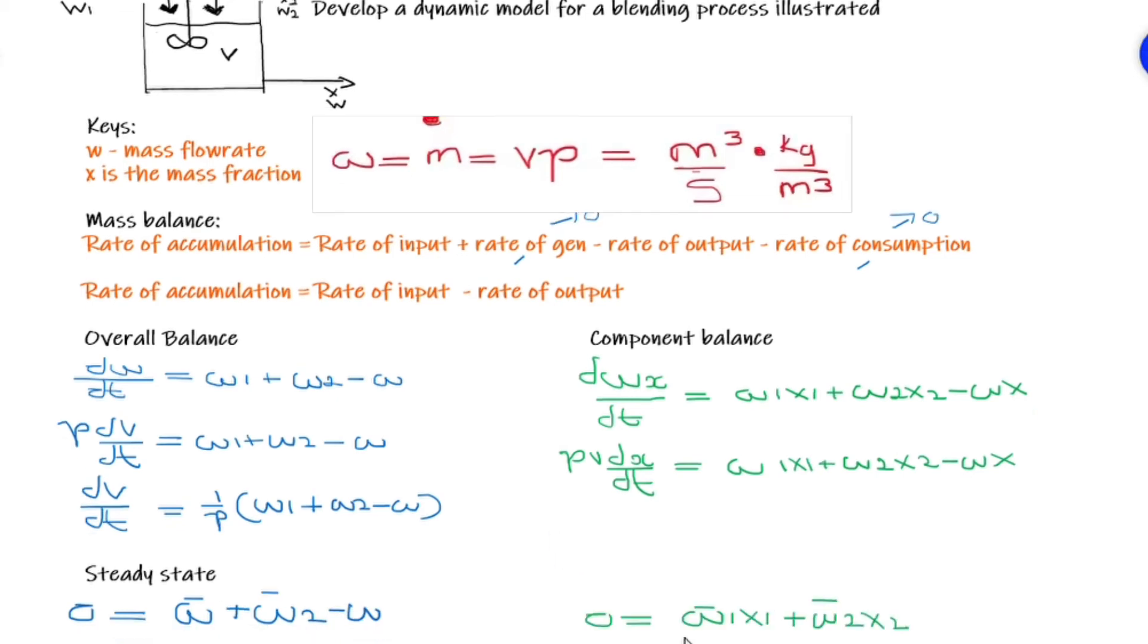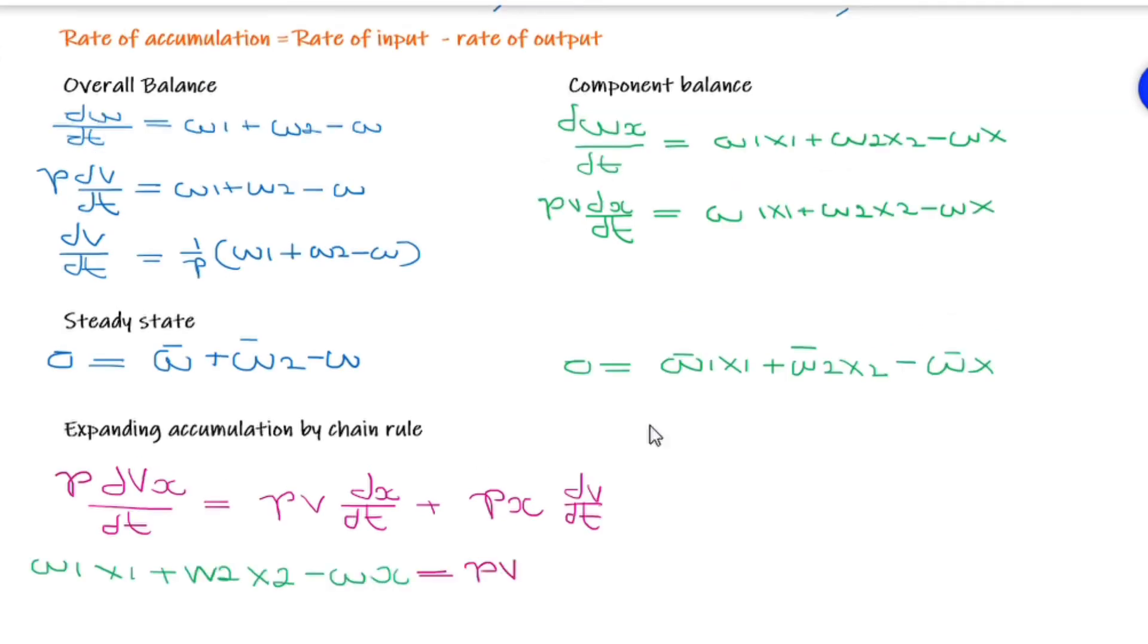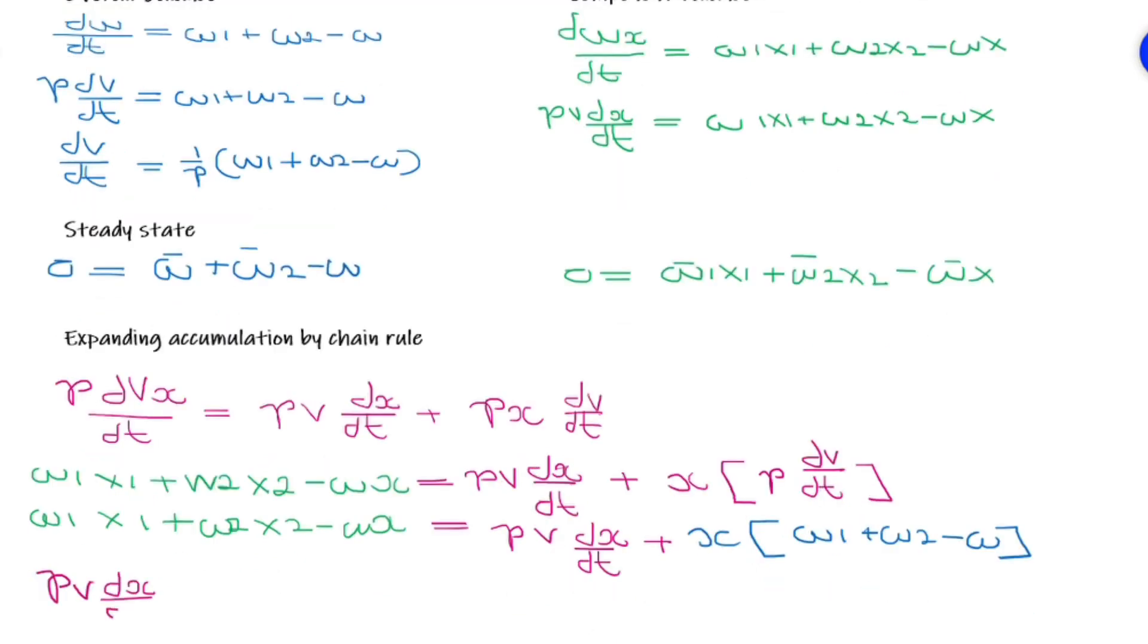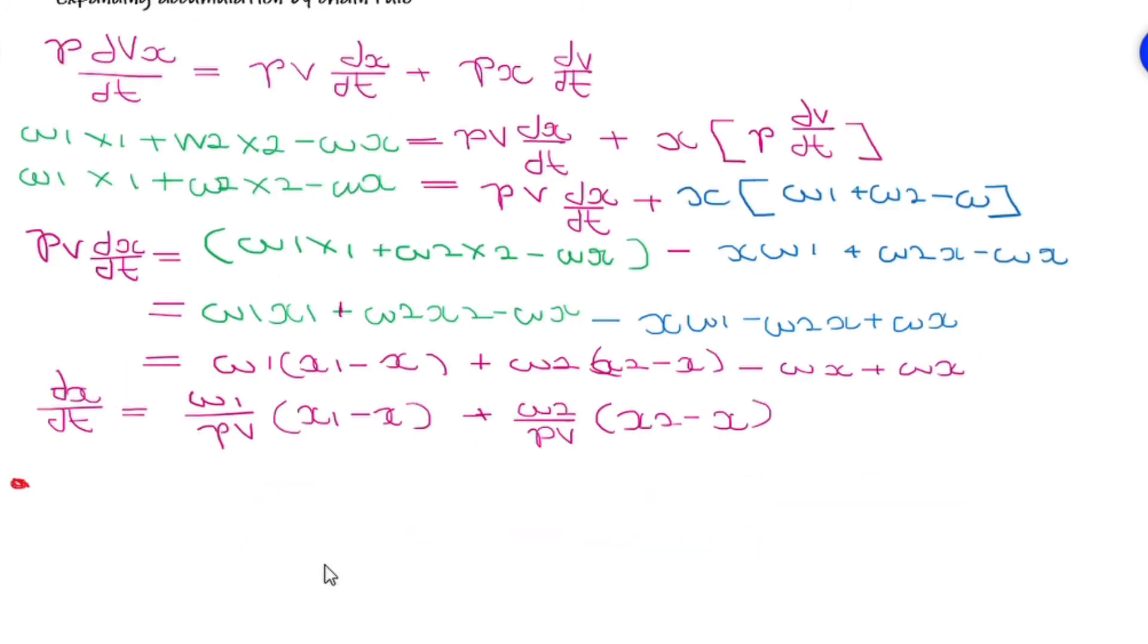Next, we can expand the accumulated by the chain rule. This will separate our variables into two with an addition sign in between. Substitute everything that we managed to equate above, which is the overall balance and the component balance, onto this new expanded accumulated by chain rule equation. And at the end, you should be able to get your mass fraction over time equated to mass over density and volume with X1 subtracting X plus W2 over density and volume and X2 subtracting X.